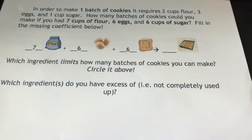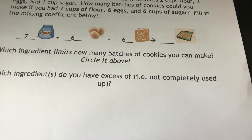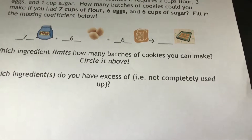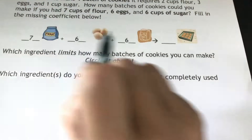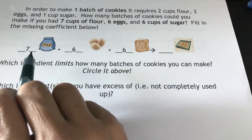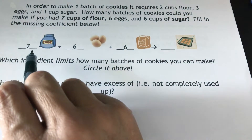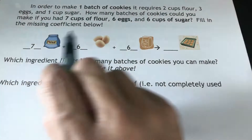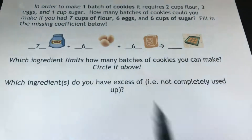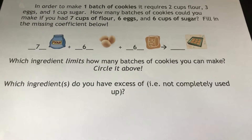To do this, you need to look at the ingredients and then see how many batches each ingredient can give you. If I look at my flour, I require two cups of flour and I have seven. Seven divided by two means I can make a maximum of three batches, and then I will have one cup left over.